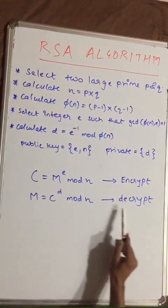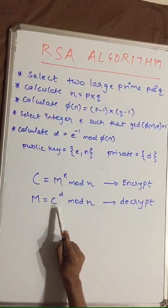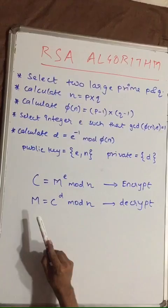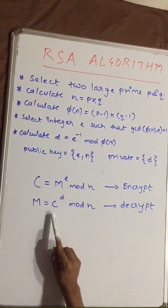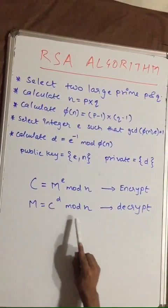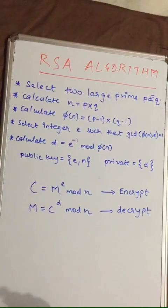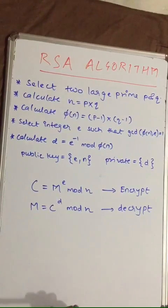Now to decrypt from ciphertext to message, the formula is: message equals c raised to d mod n. Now let's solve one example.